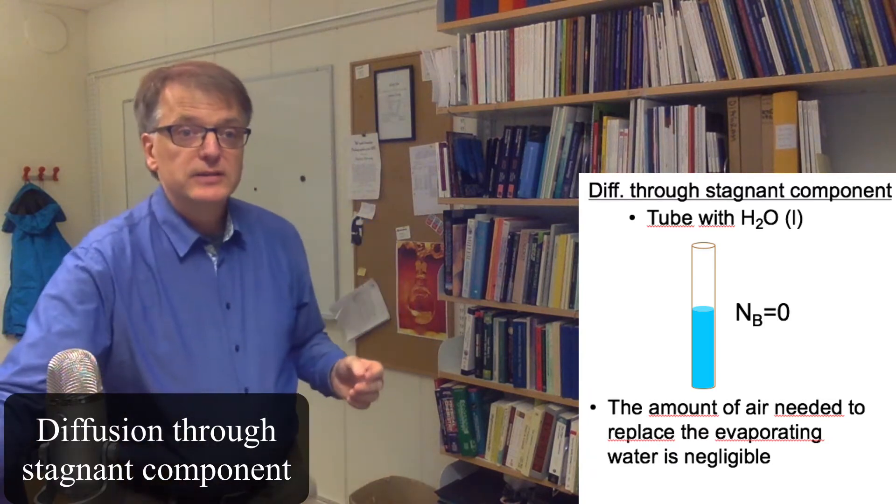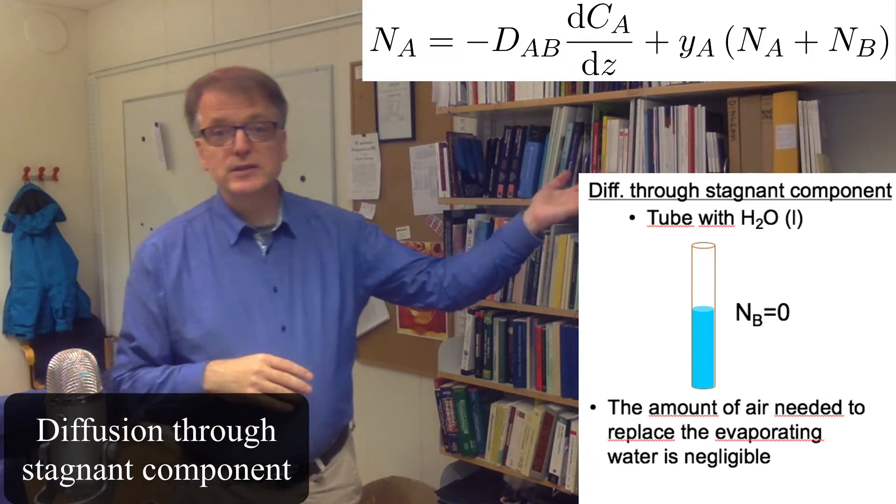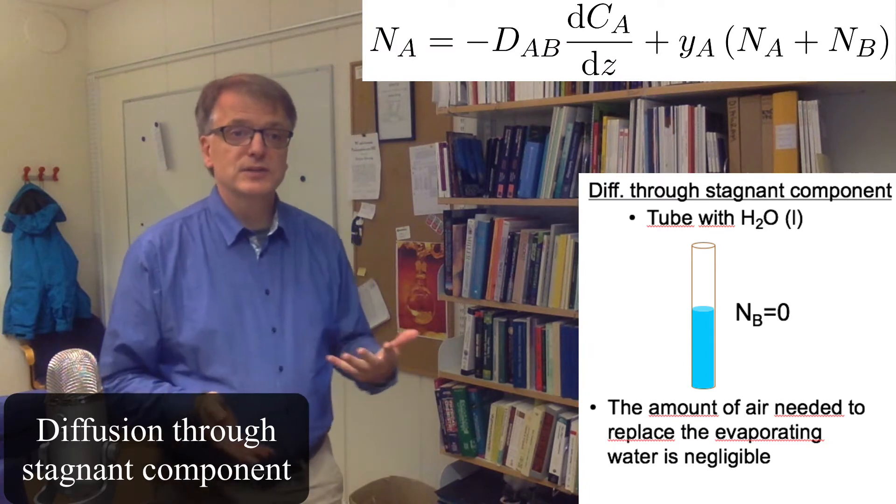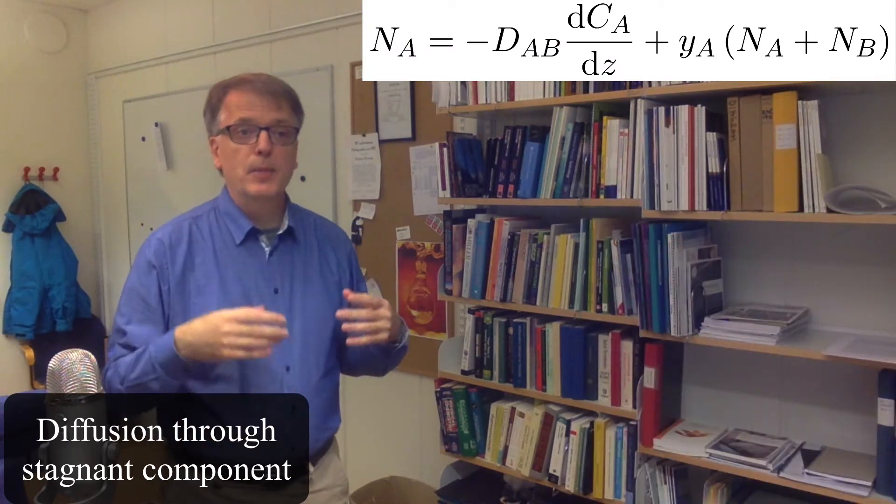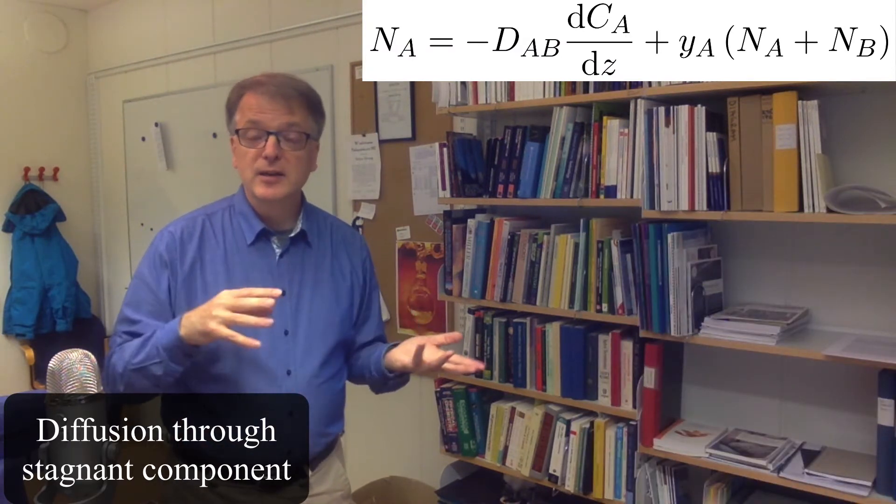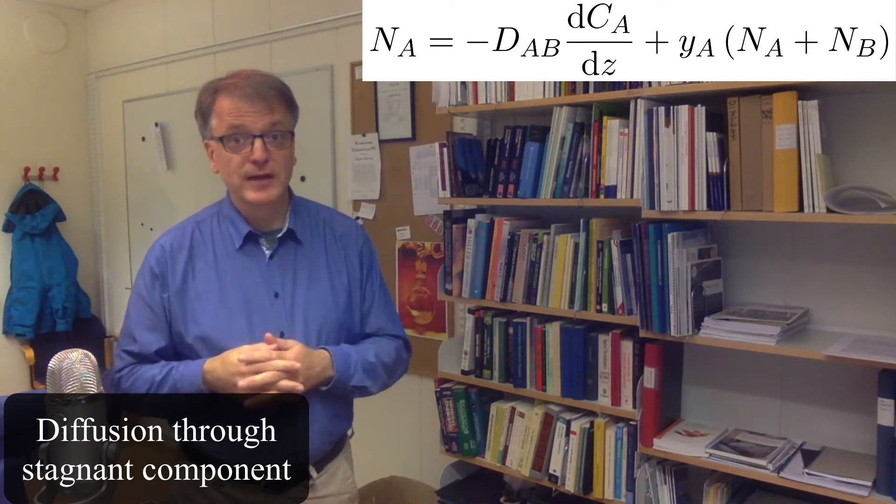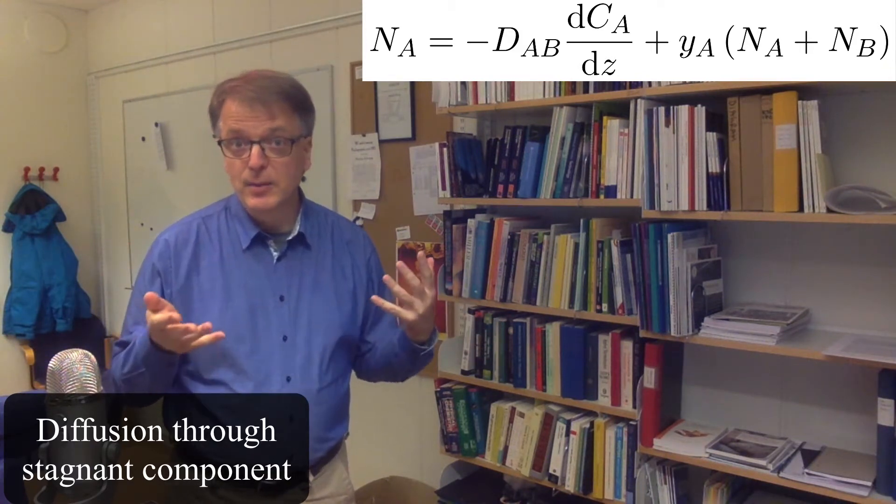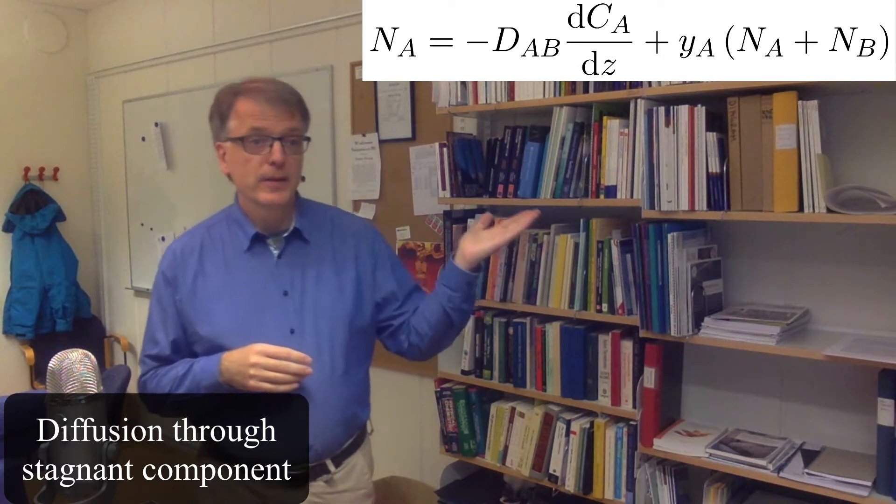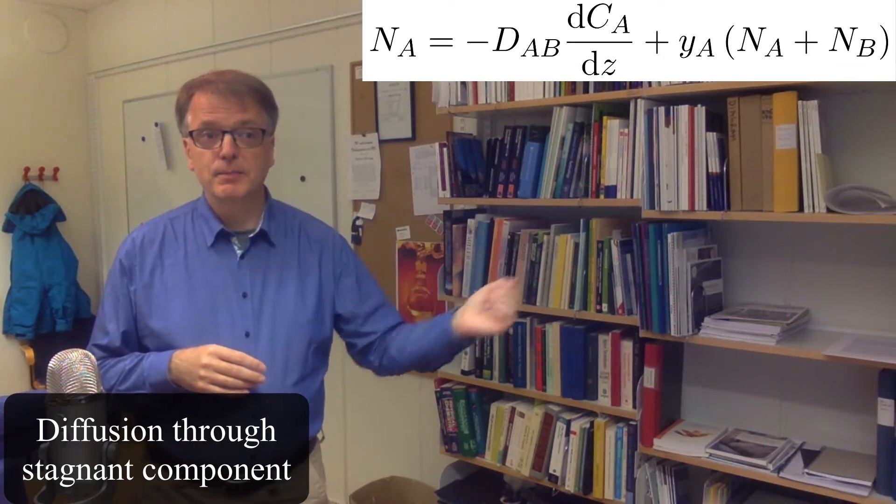So hence we get a situation where if you look at the equation here: Na equals minus diffusivity times the concentration gradient plus Ca divided by C, or if we have gases you can simply say the molar fraction of A times the Na plus Nb.